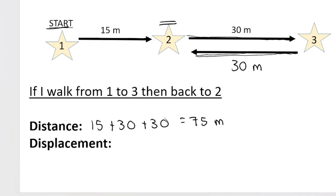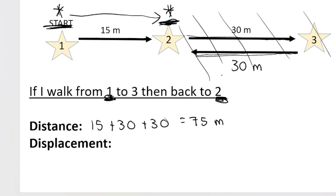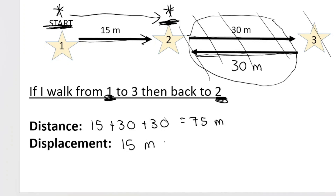Displacement is your change in position — it only considers where you start and where you end. You start at position one and end at position two. A vector quantity points from your initial to your final position and ignores everything else. Going from two to three you went 30 meters that way, then 30 meters back — those 30 meters cancel each other out in terms of displacement. So your displacement is from position one to position two: 15 meters to the right.